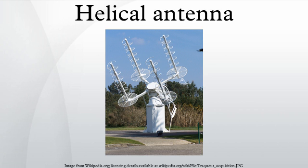Helical antennas can receive signals with any type of linear polarization, such as horizontal or vertical polarization, but when receiving circularly polarized signals the handedness of the receiving antenna must be the same as the transmitting antenna. Left-hand polarized antennas suffer a severe loss of gain when receiving right-circularly polarized signals, and vice versa.